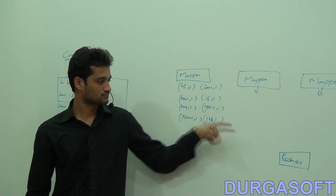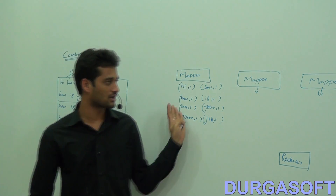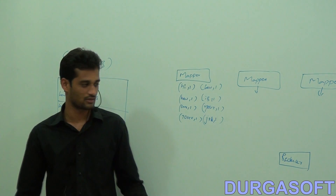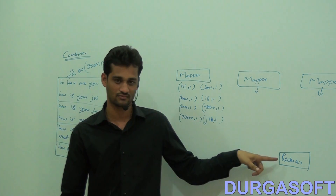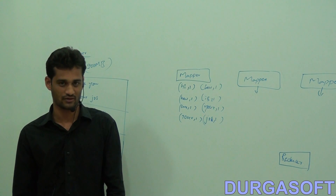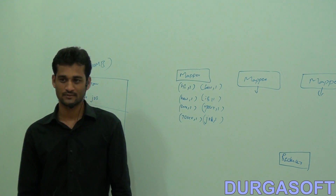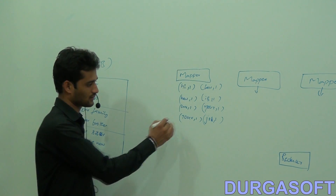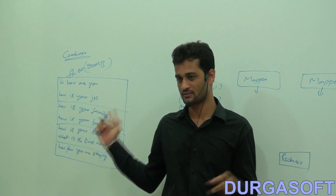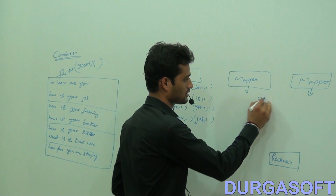See this one. What will this reducer do? This reducer should combine all your mapper output key-value pairs. How many key-value pairs are there from the first mapper? Eight. And how many key-value pairs from the second mapper? Eight.